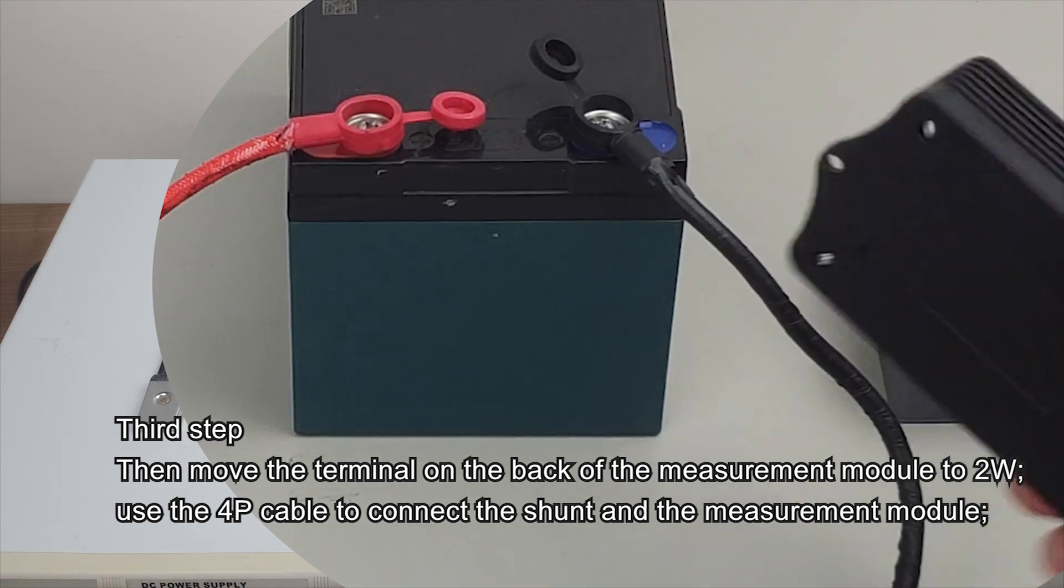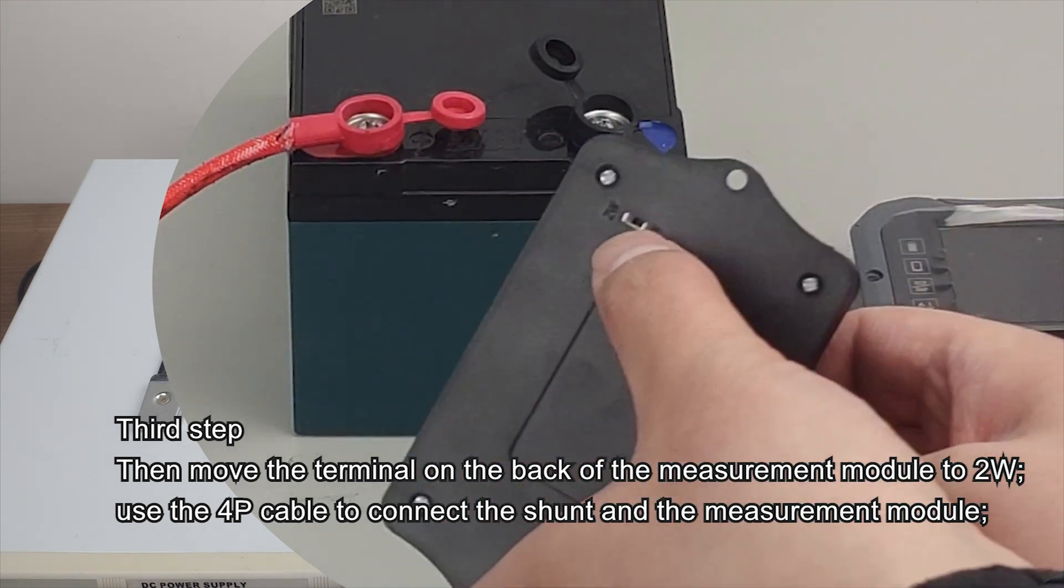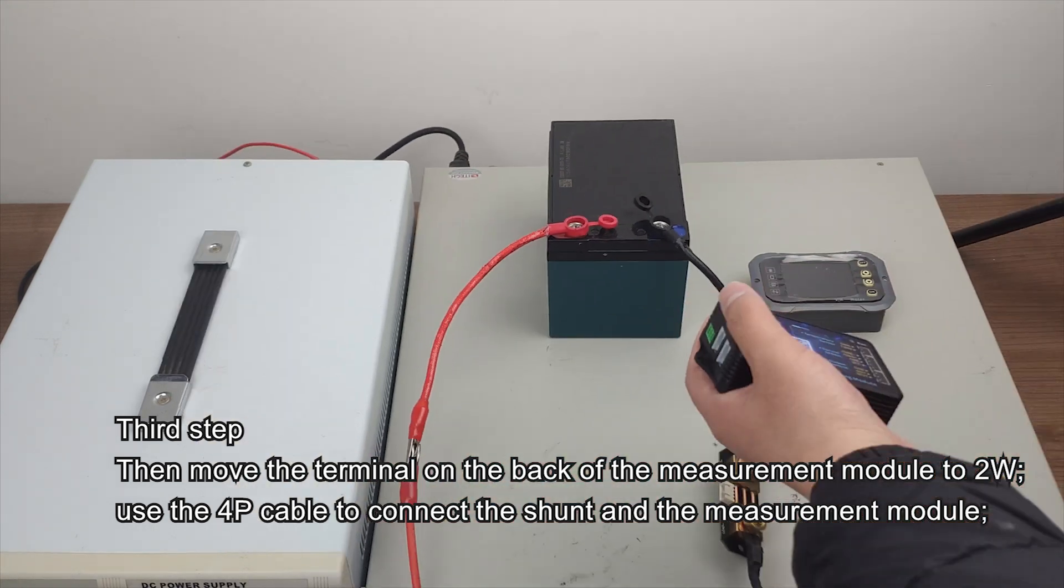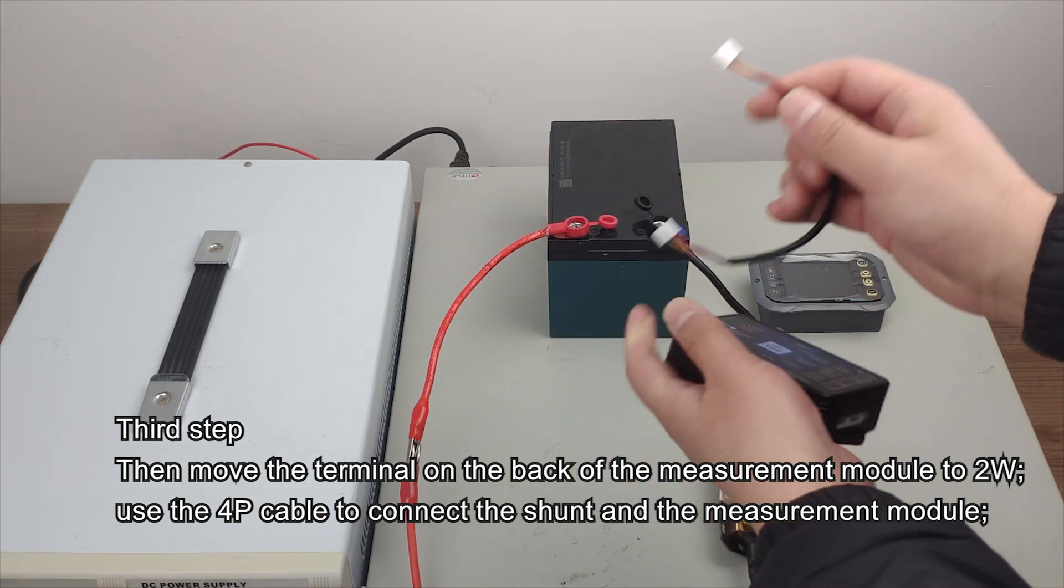Third step. Then move the terminal on the back of the measurement module to 2W. Use the 4P cable to connect the shunt and the measurement module.